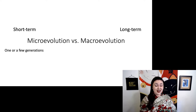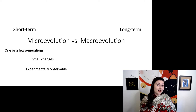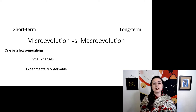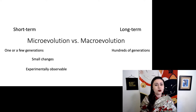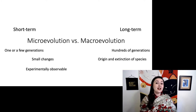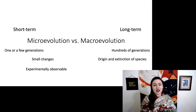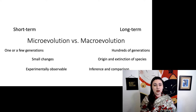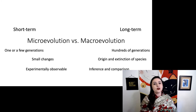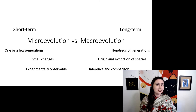When we're talking about microevolution, we're talking about only a few generations and very small changes, but in many cases we can actually observe these types of changes in an experiment — and there have been many different experiments that show microevolution over the years. Macroevolution is a little bit different, because now we're talking about hundreds or thousands or hundreds of thousands of generations — a really long time. These changes are much bigger; we're talking about the origin and extinction of species. And because we're talking about such a long stretch of time, these are not experimentally observable. We can only get this information through inference and comparison, so our data here is a little more indirect.